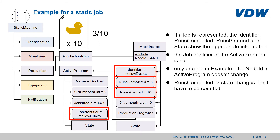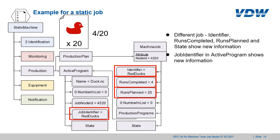In this example with exactly one static job, the node ID will never change over the whole lifetime of the server. As the program is running — for example having completed three runs, being in the fourth — we can see the runs planned being 10 from the beginning of the job and the runs completed being three. So I don't have to count anymore how often the job has run. As soon as the yellow ducks are done and the second job with the red ducks starts, the identifier changes to 'red ducks', and that is also represented in the job identifier of the active program. The runs planned for the red ducks job are 20, and at the moment four ducks are completed.